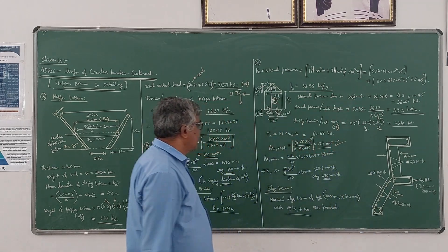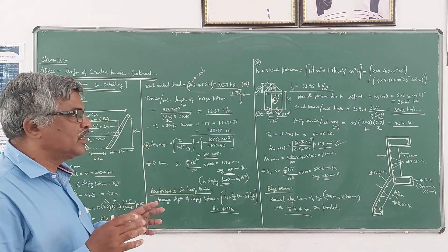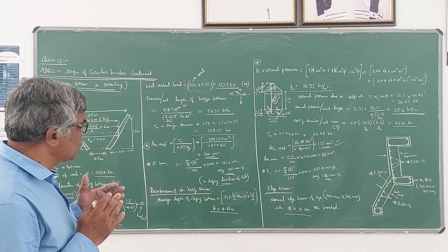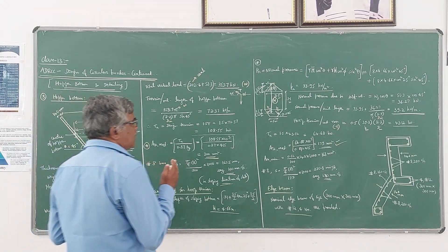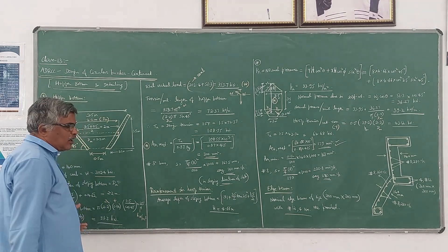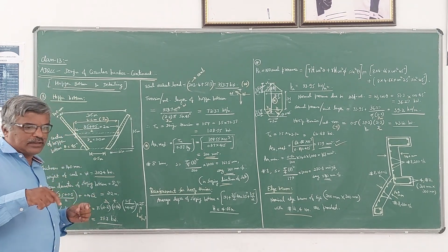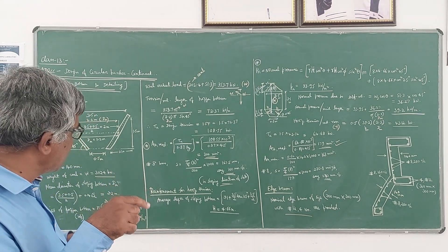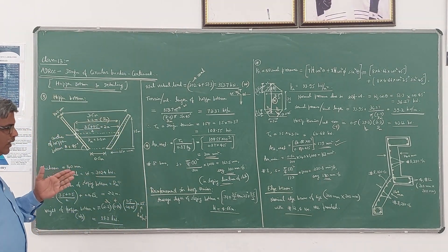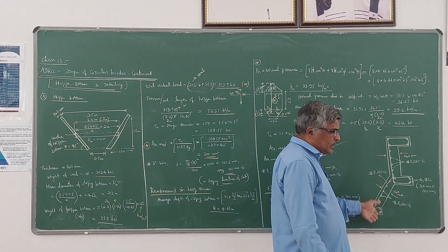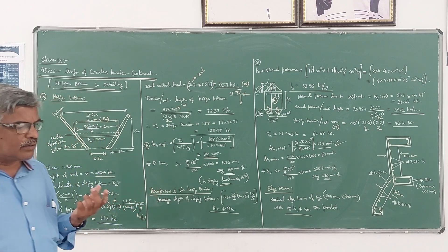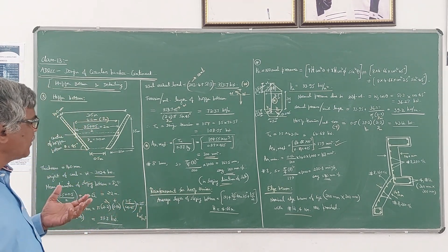In the case of a circular bunker, instead of length and breadth we have to assume the diameter and then find the height and hoop tension due to both horizontal pressure and normal pressure. When calculating the hoop tension due to normal pressure, we have to calculate the self-weight of the hopper bottom as well, and the dimensions are taken at the centre diameter of the hopper bottom. Reinforcements are calculated for both hoop tensions: one reinforcement is provided along the slope direction and another along the perpendicular direction. This is how we can design either a rectangular bunker or a circular bunker of a given capacity. Thank you.